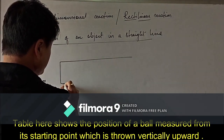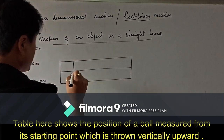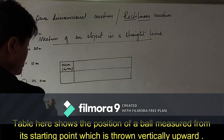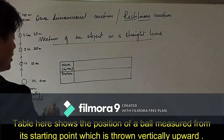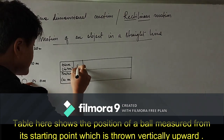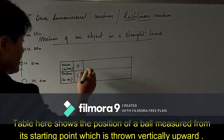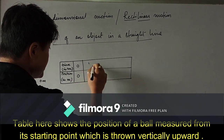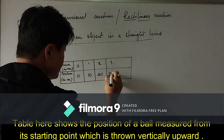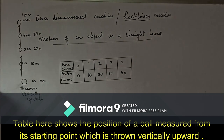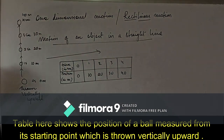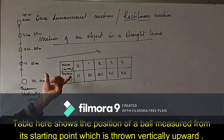This motion can be represented in a table with time in seconds and position of the ball in meters: 0s → 0m, 1s → 10m, 2s → 20m, 3s → 30m, 4s → 40m. Throughout all four seconds the ball does not change its direction — it moves in a straight line — confirming it is rectilinear or one dimensional motion.